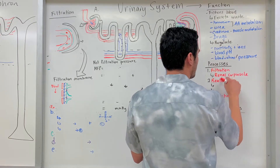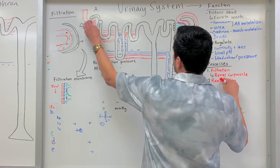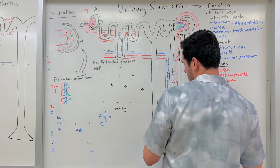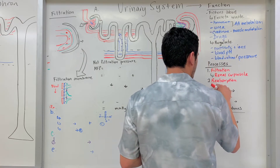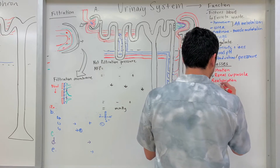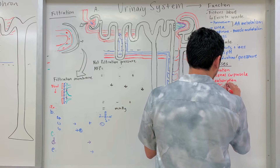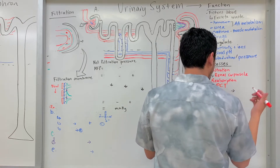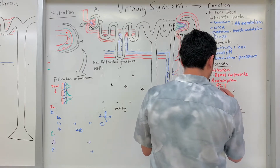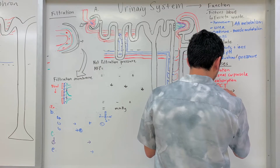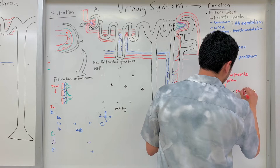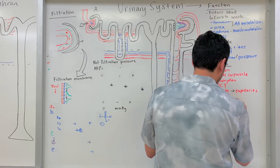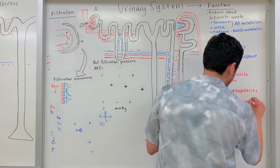For reabsorption, filtration occurs here within the renal corpuscle, where we get the formation of filtrate that travels through the different tubules. We get the formation of urine as it collects at the collecting duct. Reabsorption primarily occurs at the proximal convoluted tubule, where we're getting nutrients from the tubules back into the blood within those capillaries. For secretion, it's the opposite — we're getting components from the blood in those capillaries into the tubules so they can be removed.